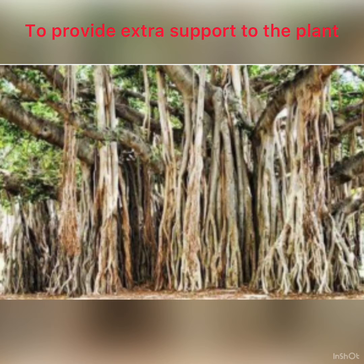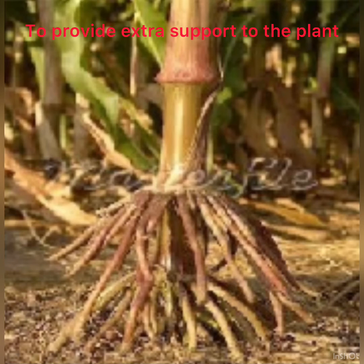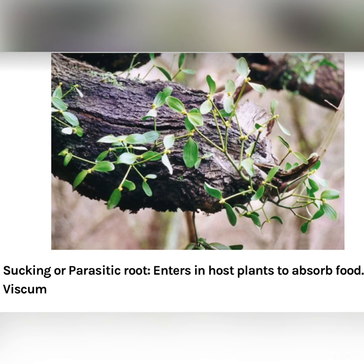In some plants, roots provide extra support. In plants like the banyan tree, extra roots arise from the stem and branches, grow downward, and fix into the soil. These are called prop roots. In some plants, the roots enter the host plant to absorb food — these are known as sucking roots or parasitic roots, for example in Viscum.